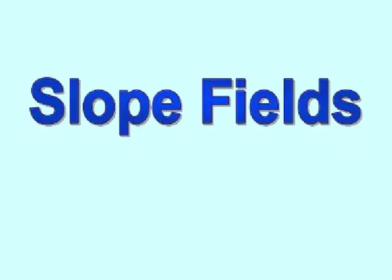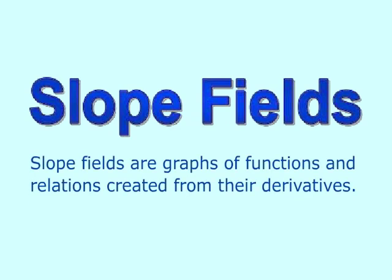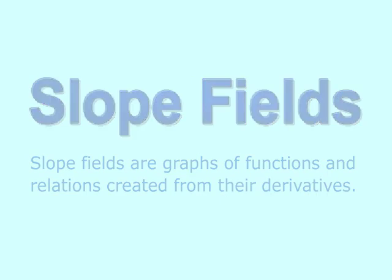This lesson is on slope fields. Slope fields are graphs of functions and relations created from their derivatives. We think of slopes in skiing, and that's a good way to think of graphing slope fields because they're undulating normally, and there are several of them at several levels. So let's go on and do something with slope fields.